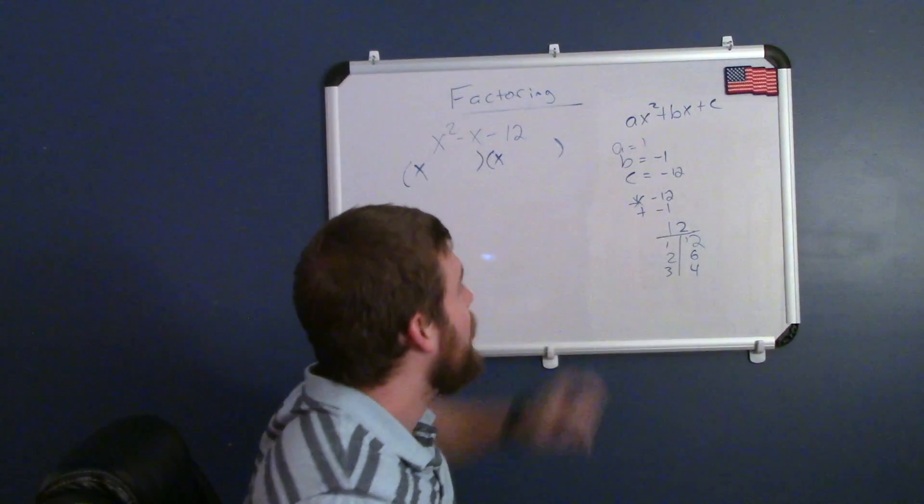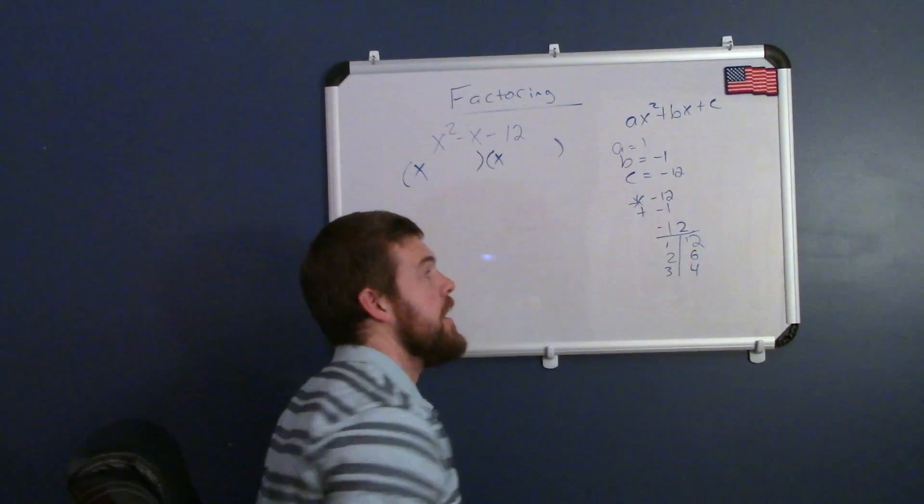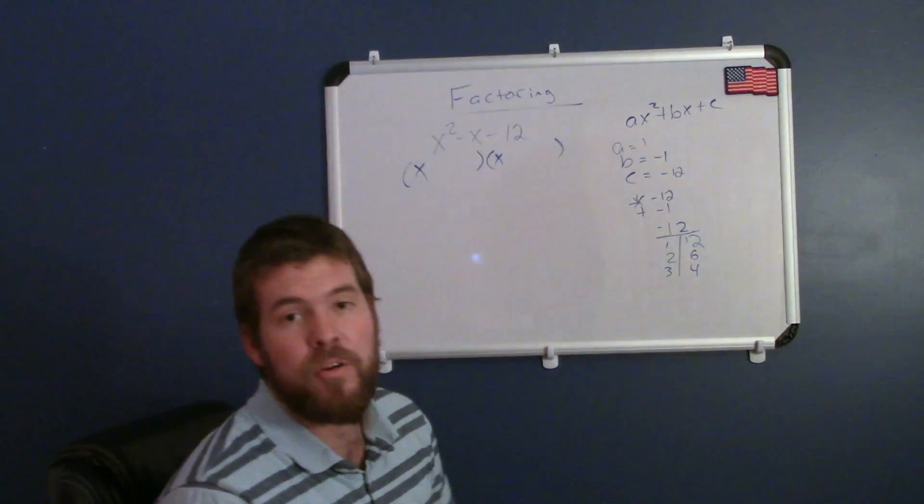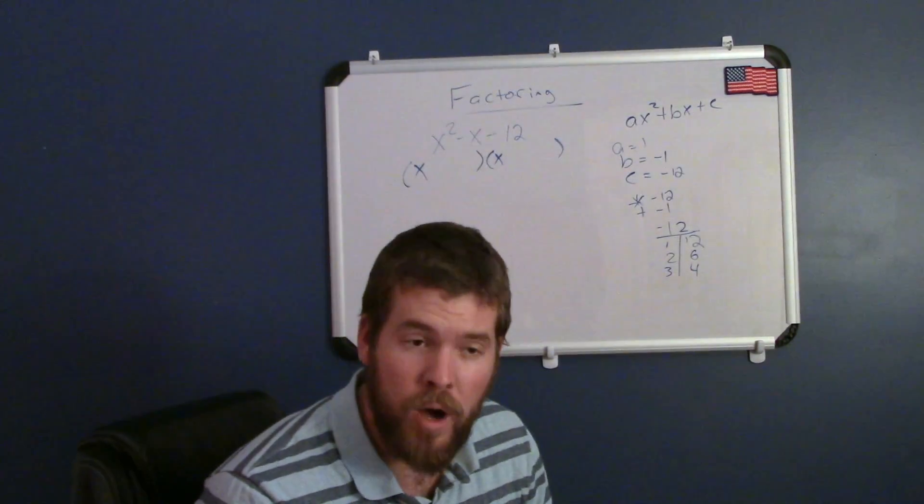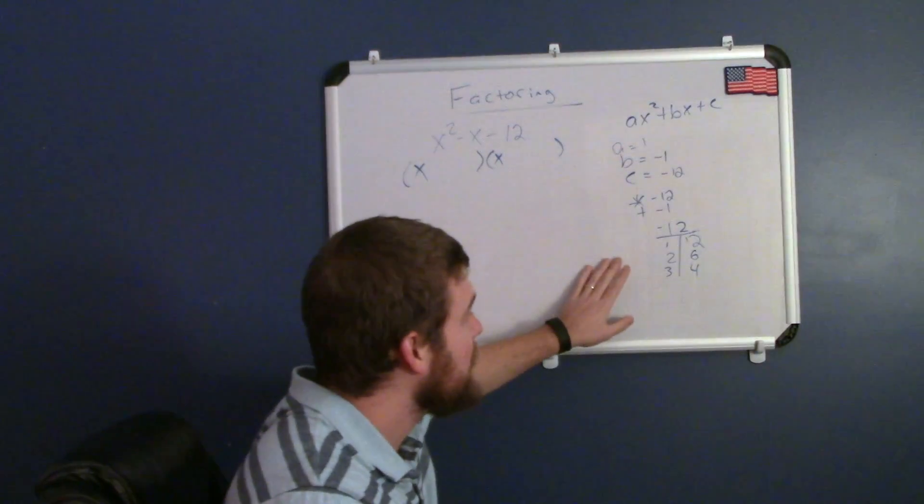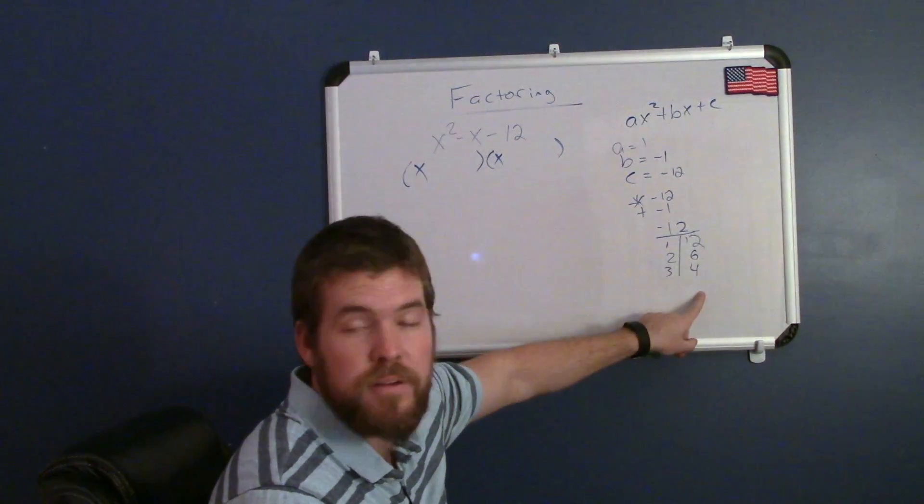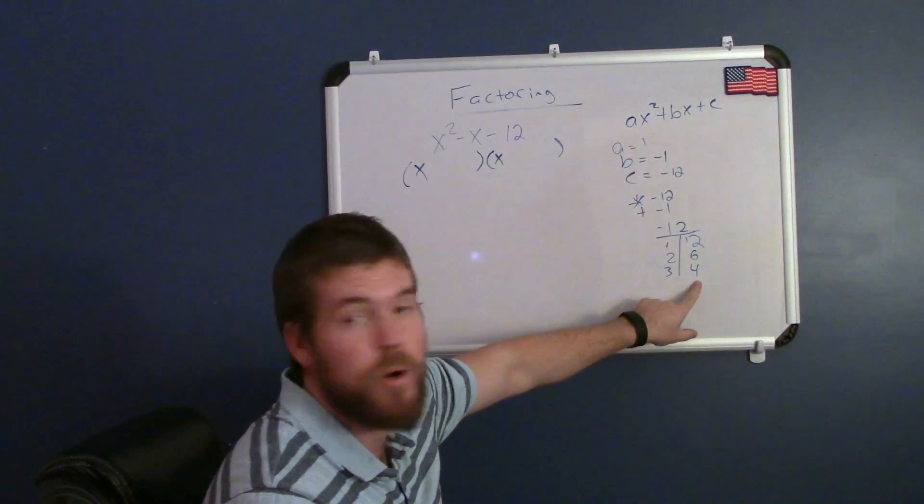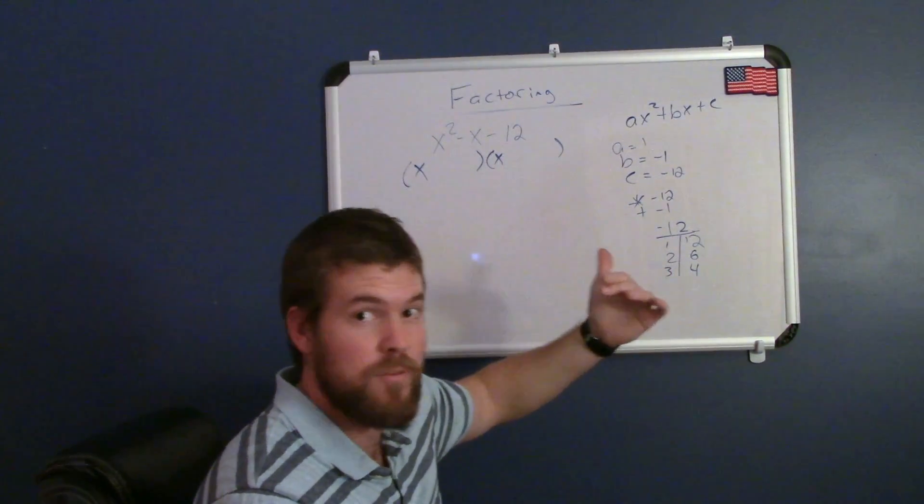Now, we know 12 has to be negative, so one of these numbers is going to have to be negative, and when we add them together, we have to get a negative 1. Since that adding is a negative 1, the negative is going to go on to the larger side, either 12, 6, or 4, and we add it together because negative 4 plus 3 will give me that negative 1.